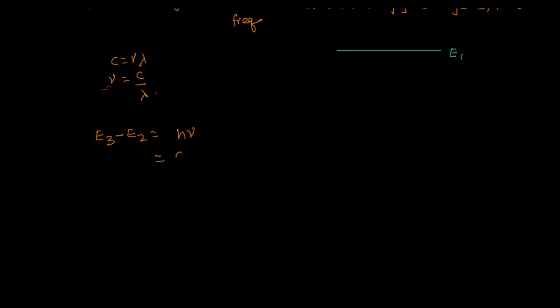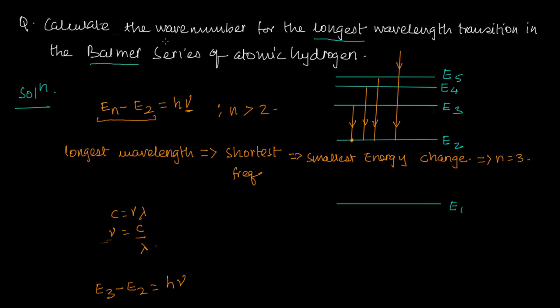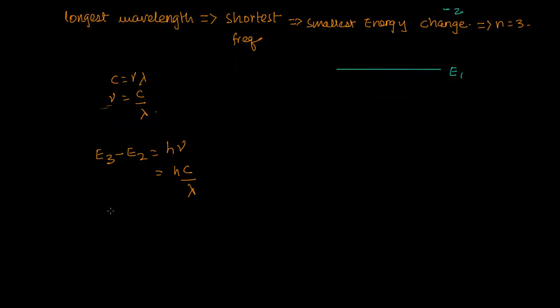So I have to find E3 minus E2. That equals hν, which equals hc over λ. They ask for the wave number, which is 1 over λ — the reciprocal of the wavelength. So 1 over λ equals (E3 minus E2) divided by hc.